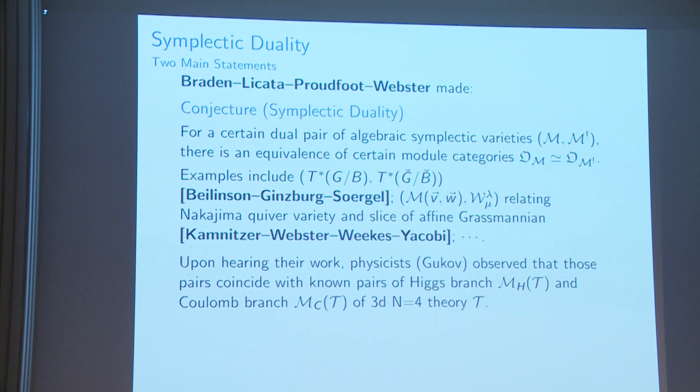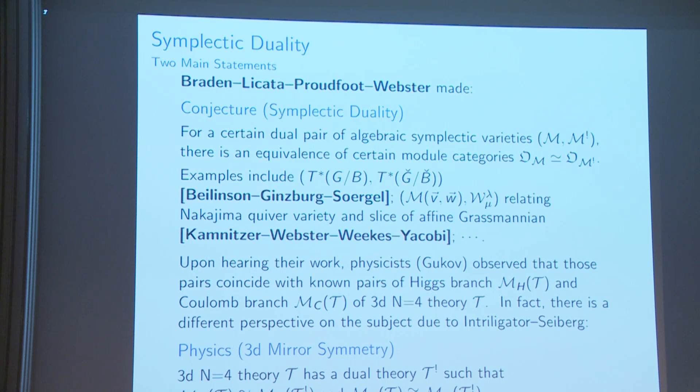Physicists realized — Gaiotto was the first — that this mathematical duality seems to have to do with a physical duality. In particular, for a given 3D N=4 theory there are what are called the Higgs branch and Coulomb branch, and Gaiotto observed that these dual pairs seem to coincide with the known pairs of symplectic duality. This actually appeared in Intriligator-Seiberg-Witten before symplectic duality was discussed.